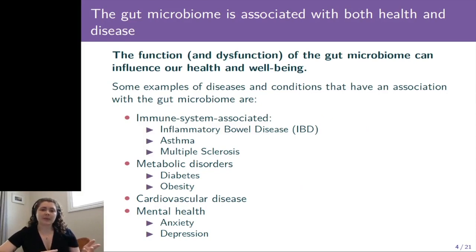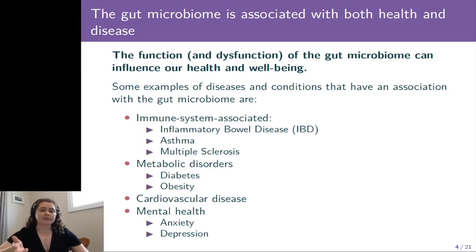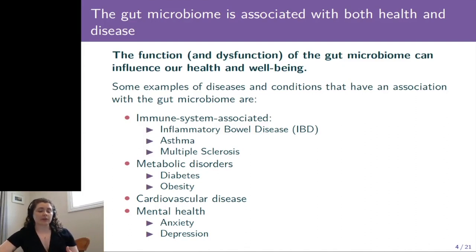Some examples of diseases and conditions that have an association with the gut microbiome are immune system-associated diseases such as inflammatory bowel disease, asthma, multiple sclerosis, some metabolic disorders like diabetes and obesity, cardiovascular disease, and even our mental health can be influenced by the gut microbiome.